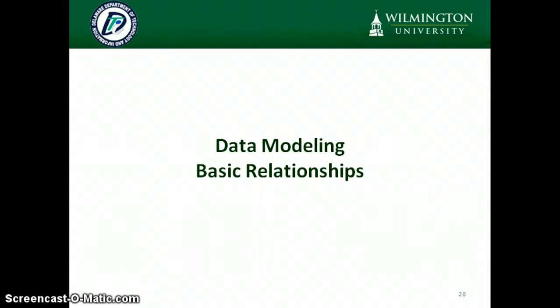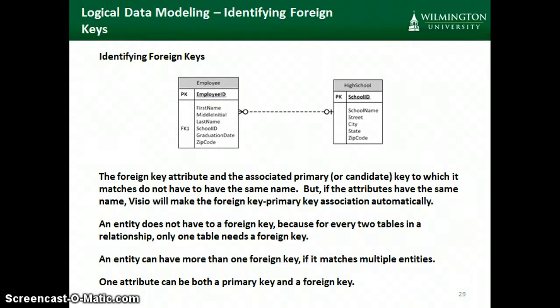Let's now look at some basic relationships in data modeling. If we look at the type of relationship summarized as one-to-many, we can see that an employee goes to one and only one high school, but a high school can have zero-to-many employees that have graduated from it. In this type of relationship, we need a foreign key — the school ID — to match the employee back to the high school from which he or she graduated.